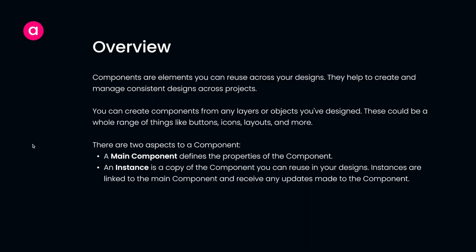Let's first quickly understand the basic definition of components. Components are elements that you can reuse across your design; they help you create and maintain a consistent design system across your projects. You can create components from any layers and objects you have designed — pretty much anything in Figma you can convert into a component. There are two critical aspects: the main component, or parent component, which defines the properties, and instances which are copies of that main component that you actually reuse. Instances are directly linked to the main component, so any changes to the main component are automatically reflected in the instances.